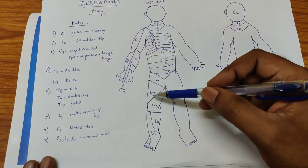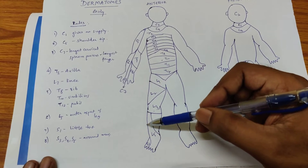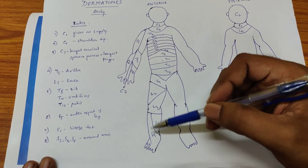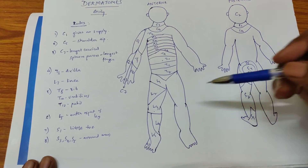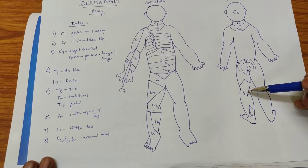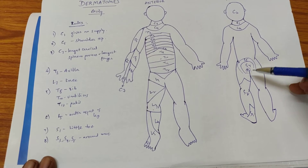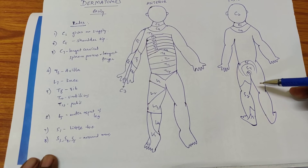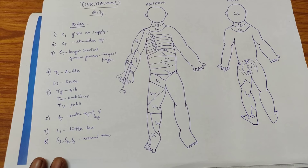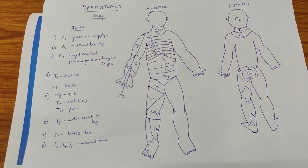Then L1 and L2 for the thigh regions. L3 supplies the knee. L4 supplies the inner aspect of the leg. L5 covers from the outer to the inner aspect of the toes. S1 supplies the lateral toe. S2 supplies the back posterior aspect of the leg. Then S3, S4, S5 supply the region around the anus. Note there is some variation due to overlapping of innervation. This is how you roughly remember the dermatomes easily.